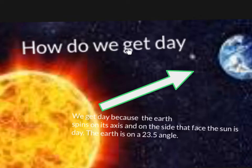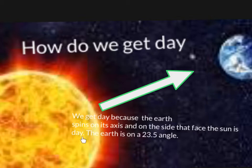How do we get day? We get day because the Earth spins on its axis and on the side that faces the Sun is day. The Earth is on a 23.5 degree angle.